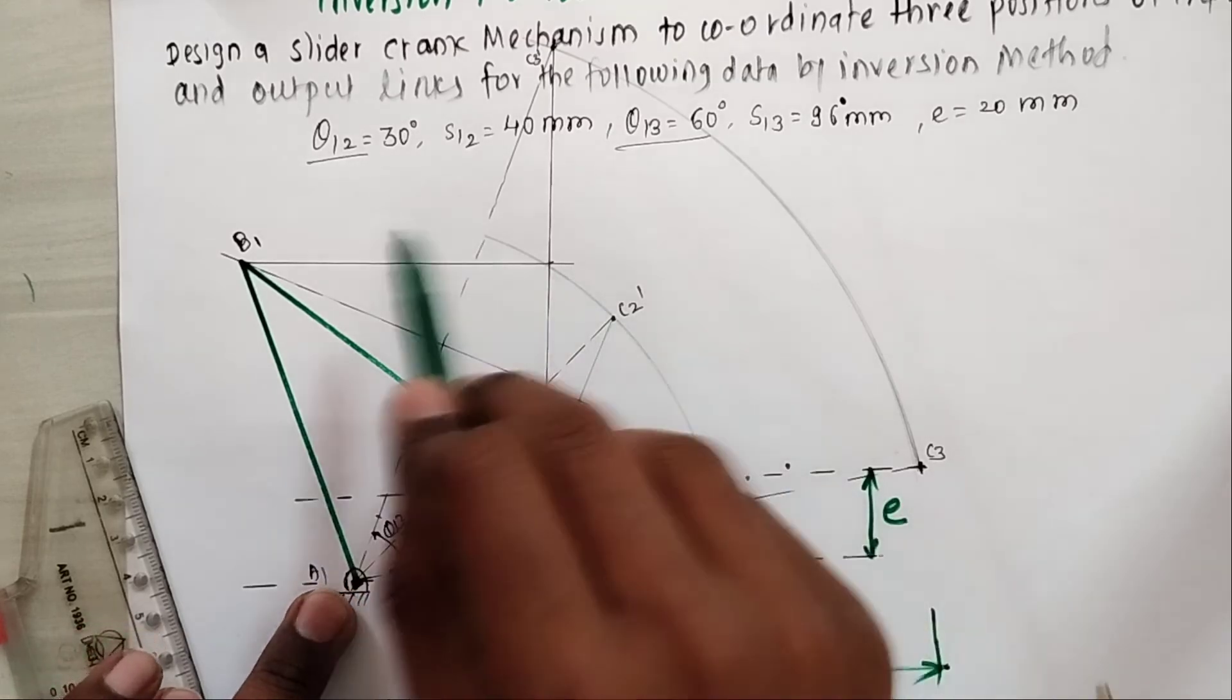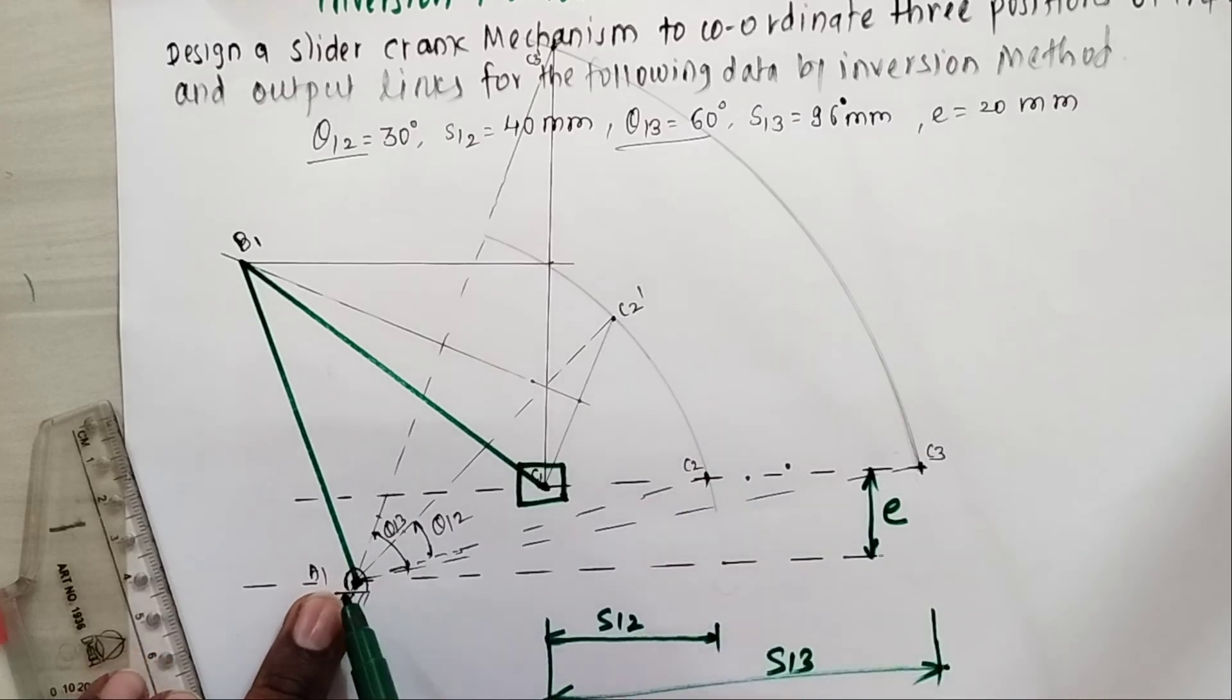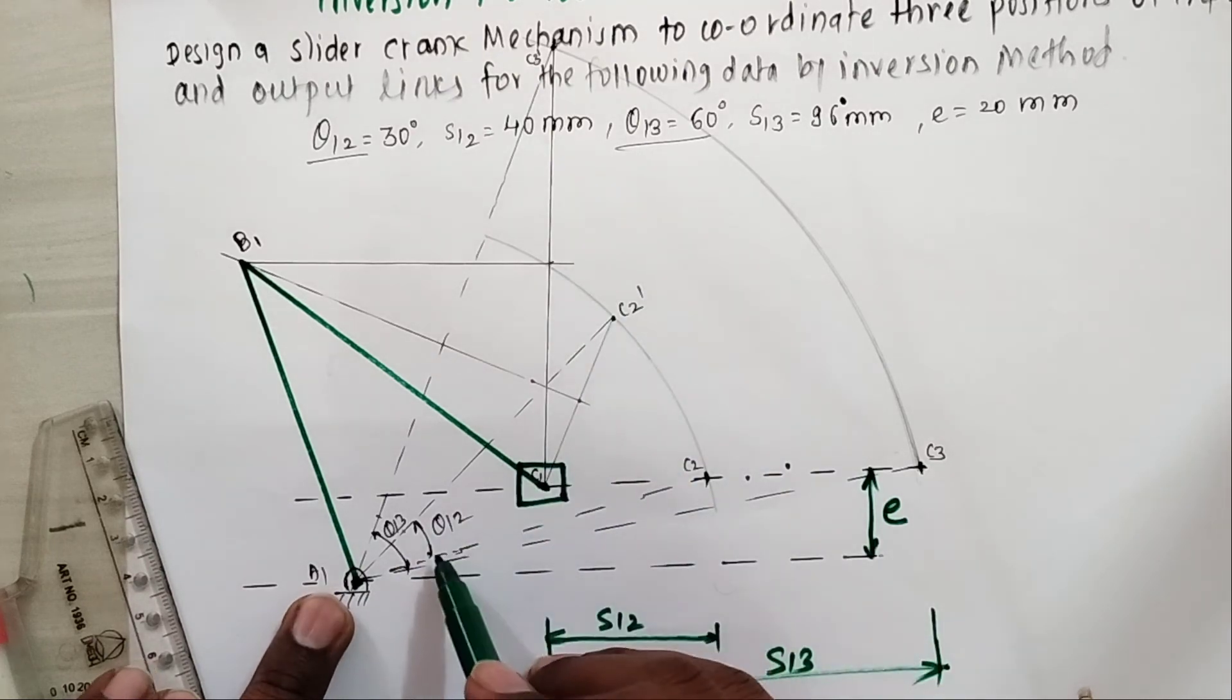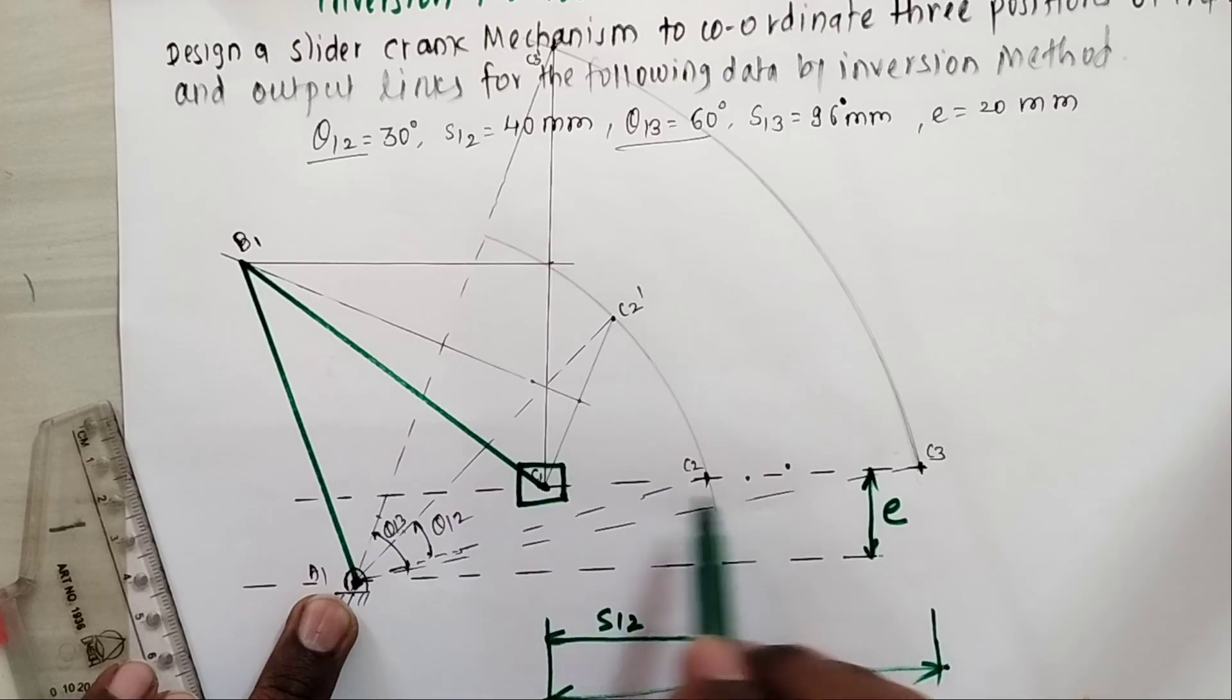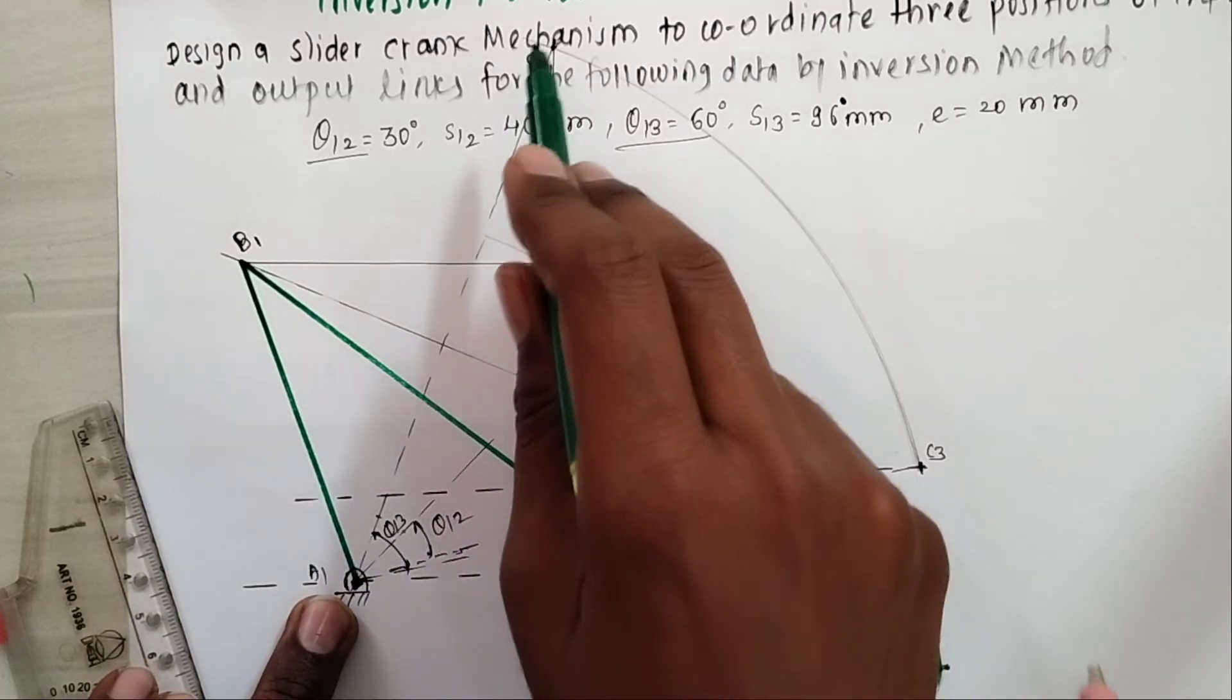Draw an arc with radius equal to A1C2 with A1 as center. Draw an arc with radius equal to A1C3 with A1 as center. Mark angles θ12 and θ13 from A1C2 and A1C3. Whenever the arcs cut these angles, we get C2 dash and C3 dash.